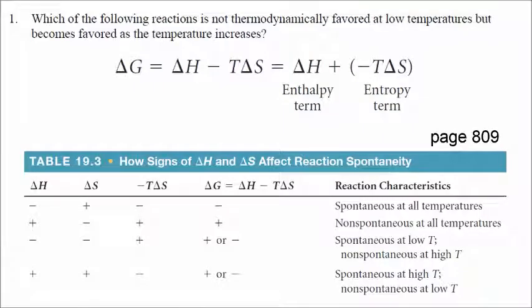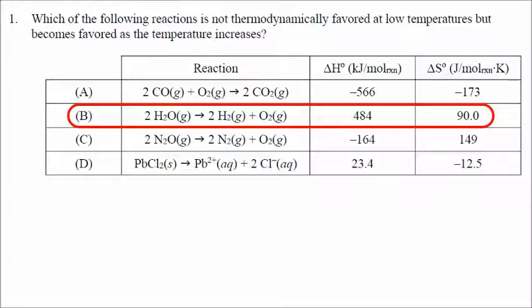Take a look on page 809. Table 19-3 gives a summary of how the signs of delta H and delta S affect whether a reaction is favored. We want a reaction that is not favored at low temperatures but becomes favored at higher temperatures. That situation is a positive delta H and a positive delta S. So the correct answer is B, because both delta H and delta S are positive.